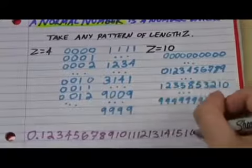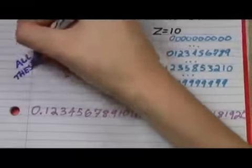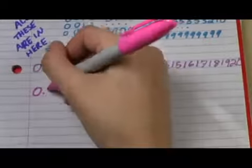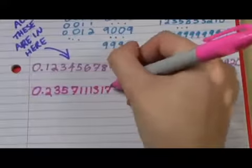Length 1 would just be every digit, so all digits happen infinity times. And all two-digit numbers also go in there somewhere. If you list all the primes, you get the Copeland-Erdös constant,